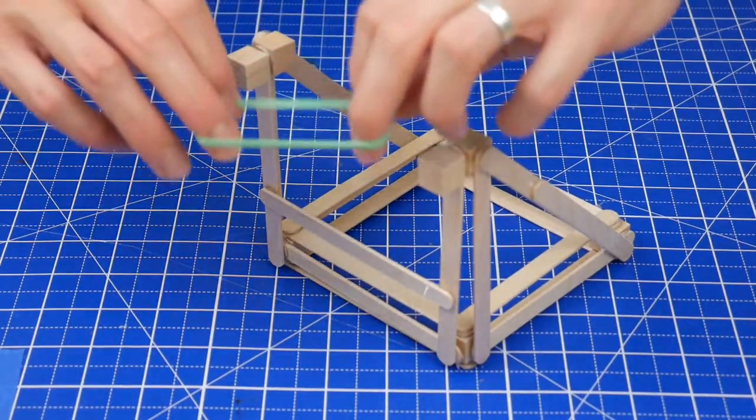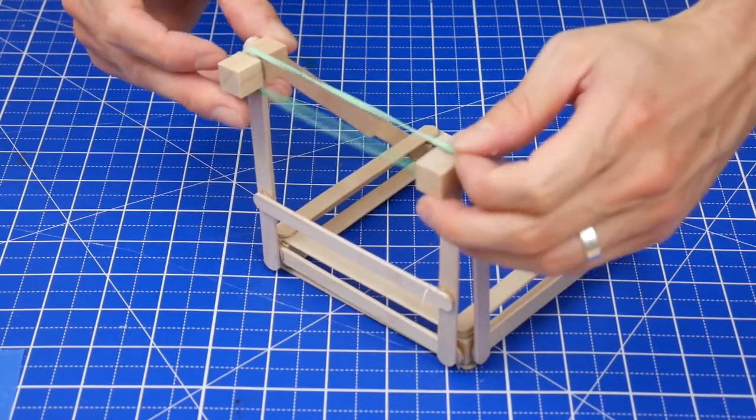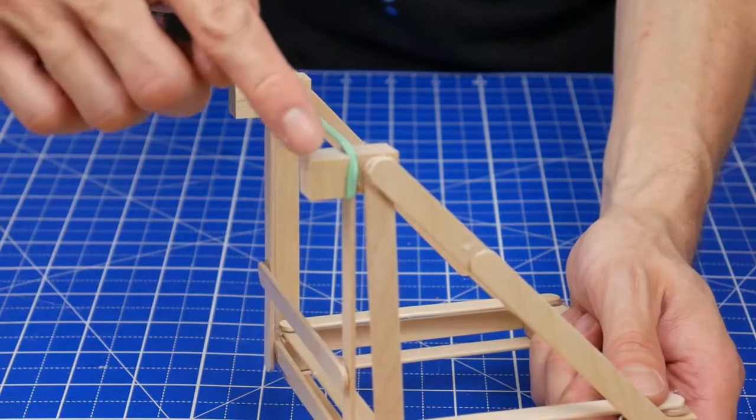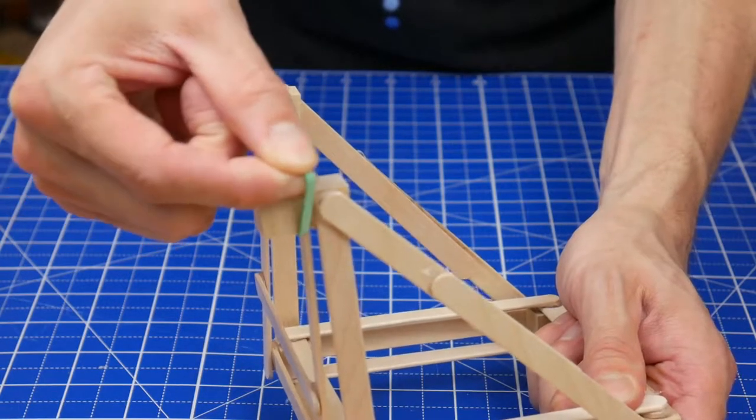Once the glue has dried completely, stretch out a rubber band between those cubes. Make sure that the rubber band is resting in that gap between the cubes.